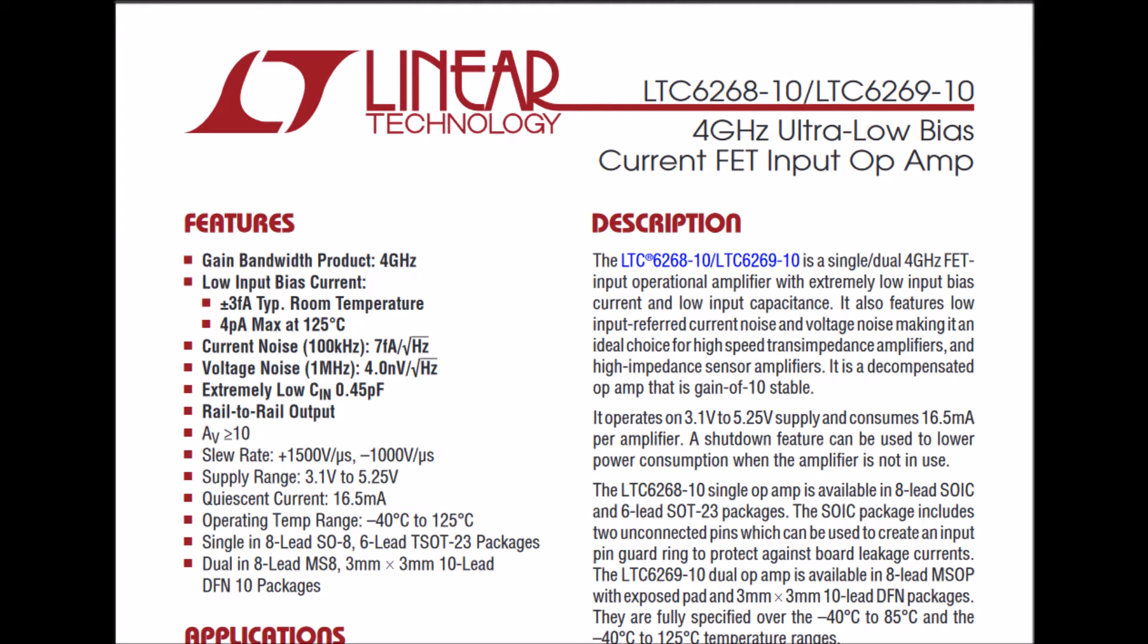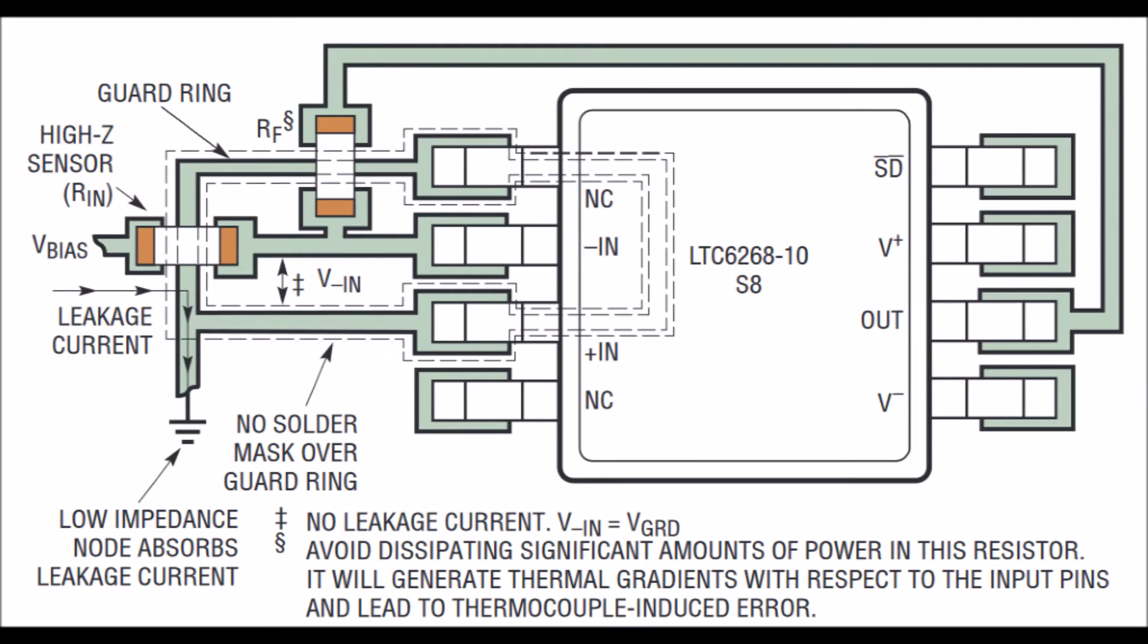Remember that data sheet for the op amp? The op amp layout shows a ring, a ground ring, placed around that point where the feedback resistor and the input resistor come together. So these two resistors need to be as close as possible to the op amp and well guarded from noise from the surrounding circuitry.